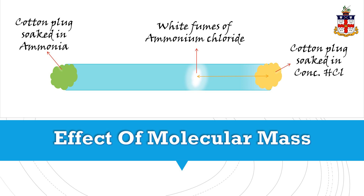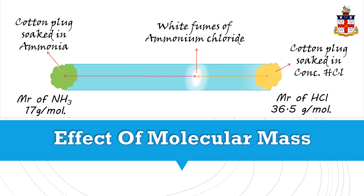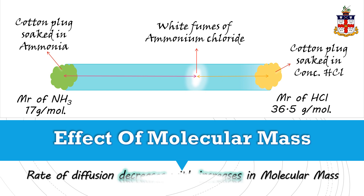So the ammonia gas has traveled a greater distance than hydrochloric acid. If we look at the molecular masses of hydrochloric acid and ammonia, it appears that the particles in hydrochloric acid are almost twice as heavy as those in ammonia gas. This clearly shows that the rate of diffusion decreases with the increase in molecular mass.